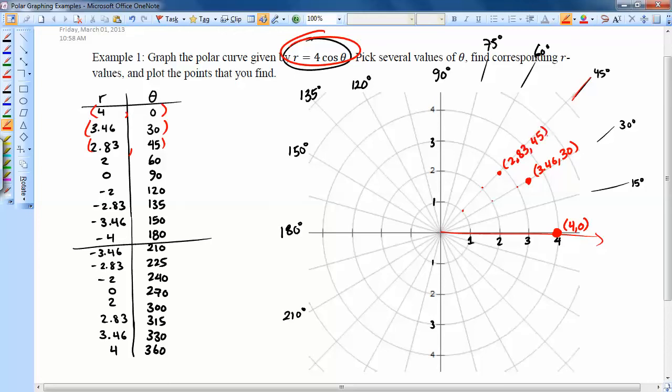Next one is 2 comma 60. So radius of 2 at 60 degrees is right on that point there. And the next one is 0, 90. So 0, 90 means find the 90 degrees, but since the radius is 0, it's just a point right at the origin there.